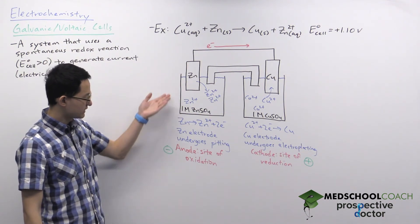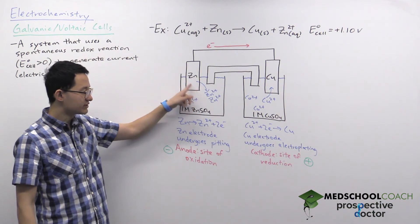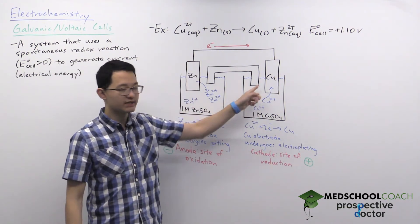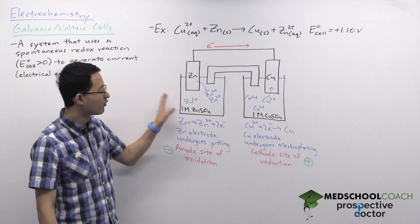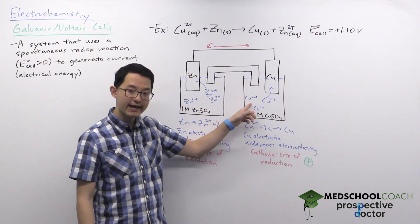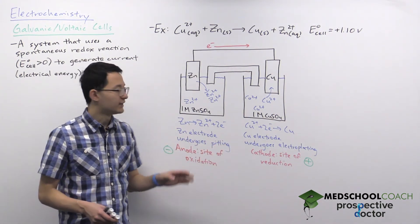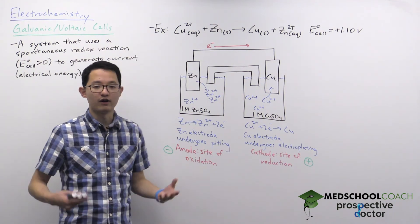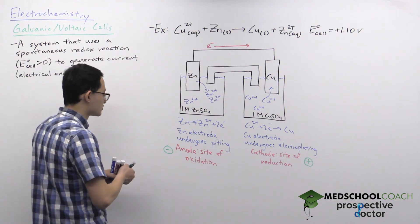Consider what happens to the charge in each half-cell: at the zinc electrode, zinc cations are being produced, building up positive charge in solution — the opposite of what we need. At the copper electrode, copper cations are being consumed, so positive charge is lost from solution — again the opposite of what we need. Without a solution to this, the circuit would run briefly and then stop.